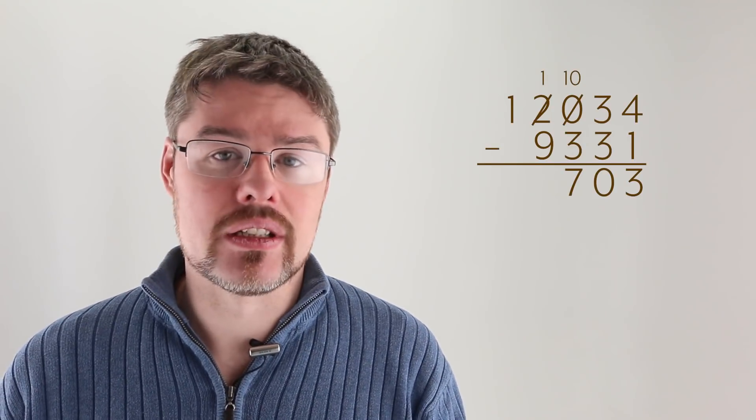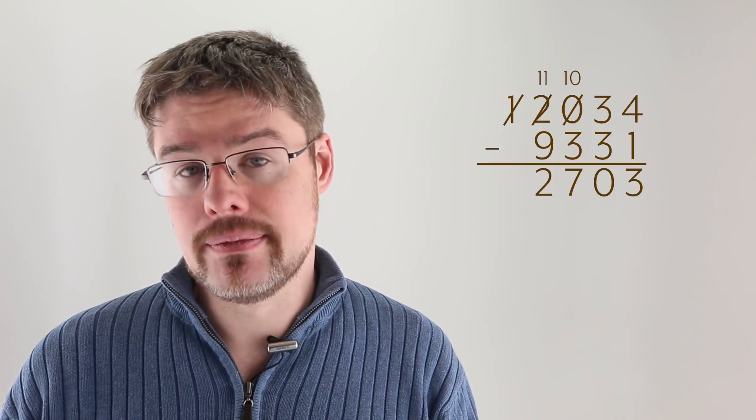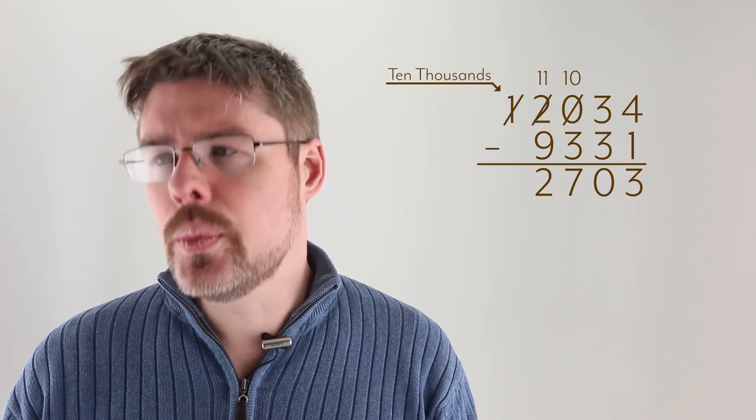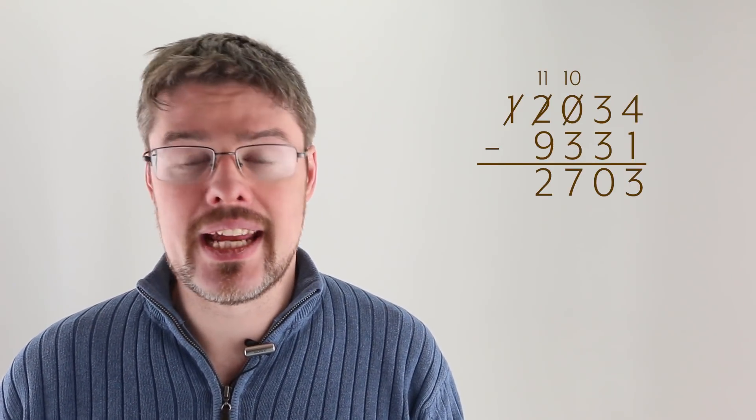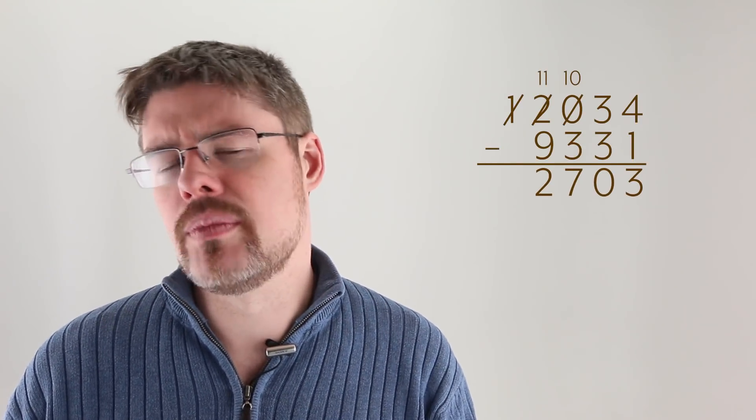The thousands column is very similar, in that we're going to take one from the 10 thousands column, split it into 10 thousands, add it to the one that's already there, and then take 9 thousand away from it, leaving us with 2. However, when we get to the 10 thousands column, we realize that we don't have anything left to subtract. This is okay. We would expect something like this, because it turns out that the answer really is 2,000, 700, and 3. There is no 10 thousands place, nor should there be if you think about it.